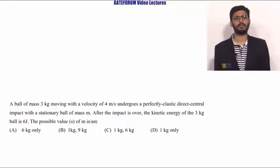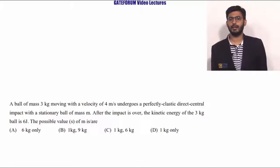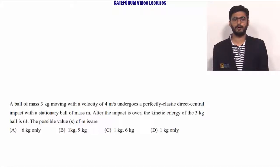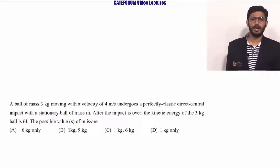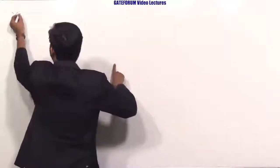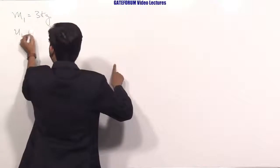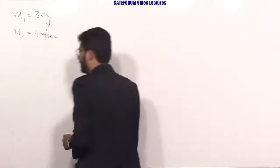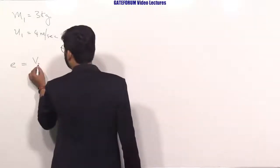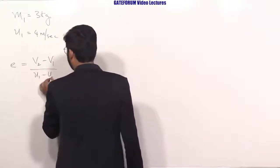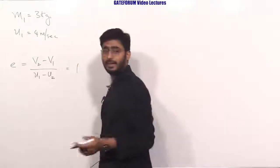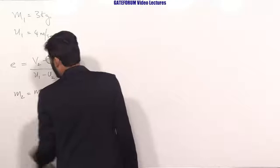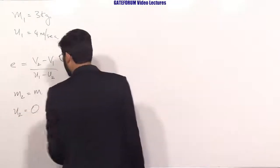This question belongs to engineering mechanics from the topic conservation of energy and conservation of momentum. A ball of mass 3 kg moving at 4 m/s undergoes a perfectly elastic direct central impact with a stationary ball of mass M. After the impact, the kinetic energy of the 3 kg ball is 6 Joules. Find the possible value of M. Given: M1 = 3 kg, U1 = 4 m/s, M2 = M, U2 = 0. For a perfectly elastic collision, the coefficient of restitution equals 1.